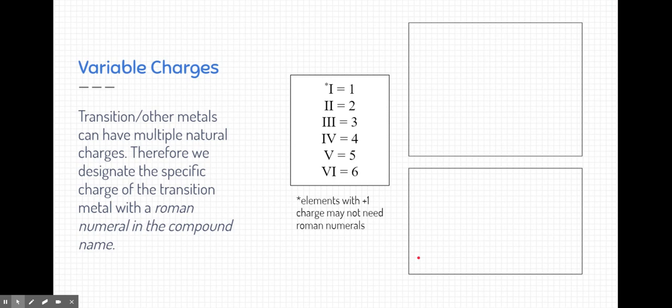So let's talk about variable charges. Transition metals and other metals can have multiple natural charges. Their charges are variable. Therefore, in order for you to be able to do these problems, you need to know what their charges are. So we specify charge in transition metal elements with Roman numerals in the compound name.